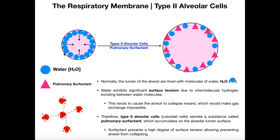Originally, it was all that hydrogen bonding collectively and the resulting surface tension that caused the alveolus to collapse. So if you put these pulmonary surfactant molecules — again, it's a mixture of them — on the lining of the lumen of the alveolus, they break the hydrogen bonding and prevent a certain degree of surface tension, which prevents the alveolus from collapsing.